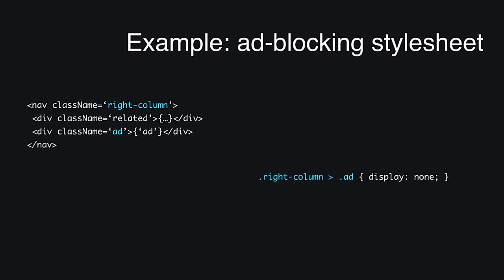Here's a simple example of how a third-party stylesheet would prevent a div from appearing. On the left, we have a snippet of JSX appearing somewhere in our app. On the right, we have an external stylesheet injected by an ad-blocking browser extension. It targets a specific part of our DOM and hides it. This could break our layout, our features, or simply starve our business to death.